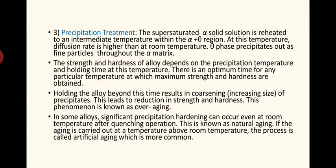At this reheating temperature, the diffusion rate is higher than at room temperature, which is why we reheat. In some materials, even without reheating, there is sufficient diffusion rate, so precipitation treatment can be done at room temperature itself. In most cases, we reheat to an intermediate temperature within the alpha plus theta region. The theta phase then precipitates out as fine particles throughout the alpha matrix, as the copper atoms can diffuse through the matrix. This fine structure of theta precipitate is stronger than a coarse structure.